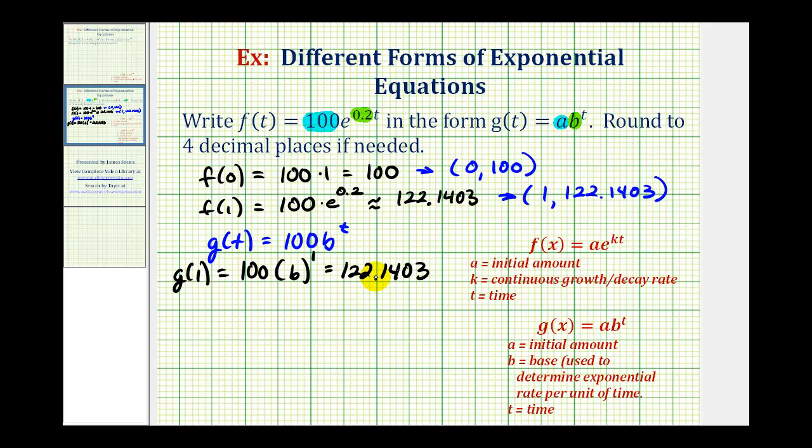Now because this is rounded, we are going to have a slight margin of error. But we can see this will be 100 b equals 122.1403. Divide both sides by 100. We have b is equal to 1.2214, if we round to four decimal places.